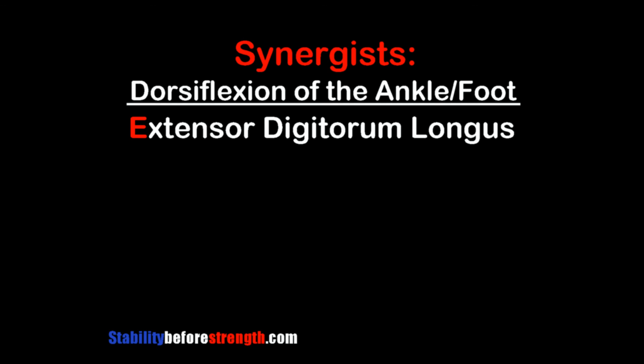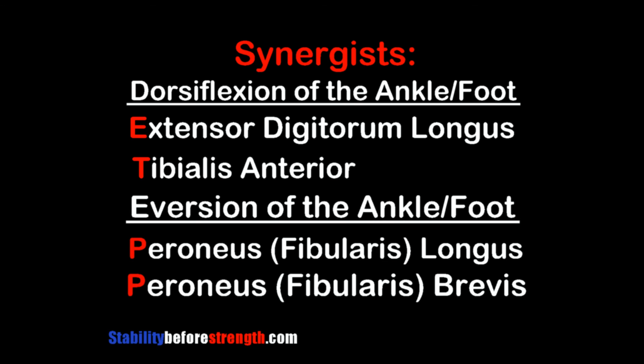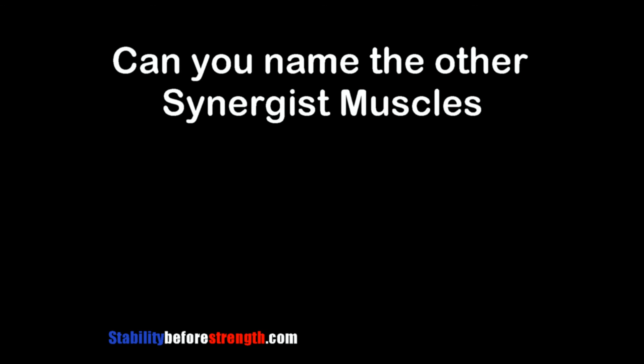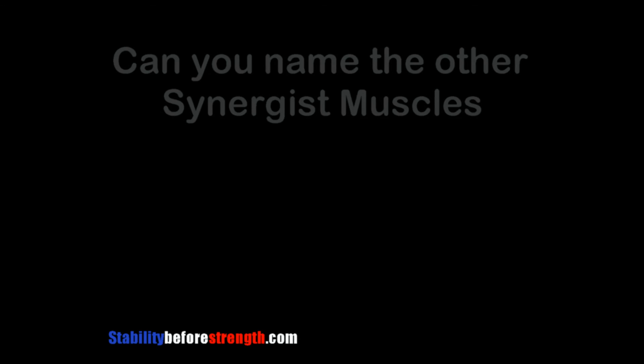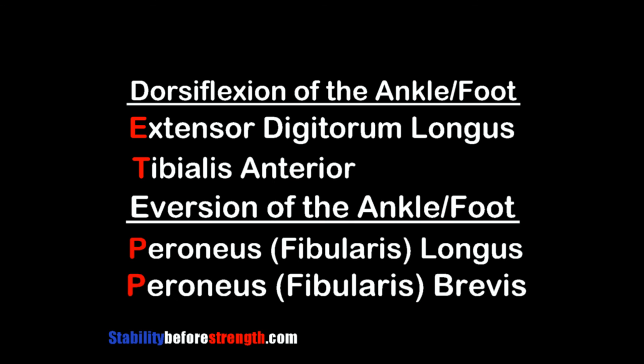Now that we know the actions, let's go over the muscles that assist the peroneus tertius. The synergists include the extensor digitorum longus and the tibialis anterior, which perform dorsiflexion, and also the peroneus longus and peroneus brevis, which perform eversion. The synergist muscles are: extensor digitorum longus, tibialis anterior, peroneus longus, and peroneus brevis.